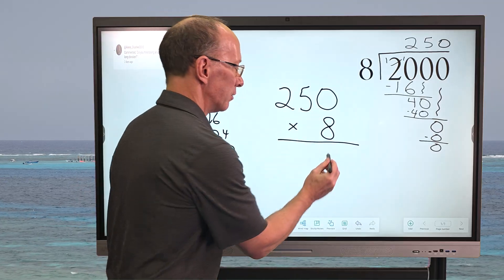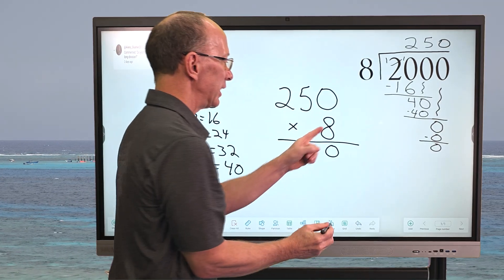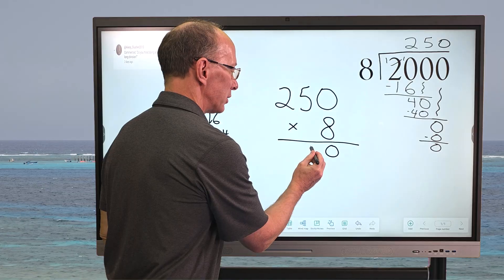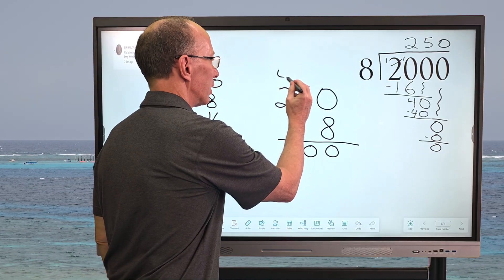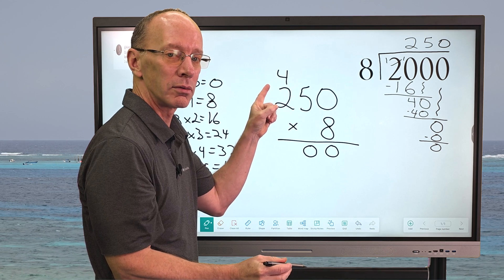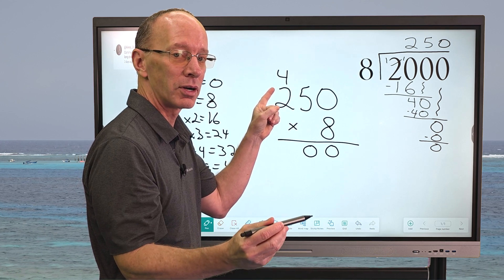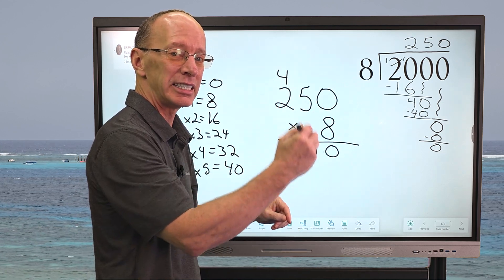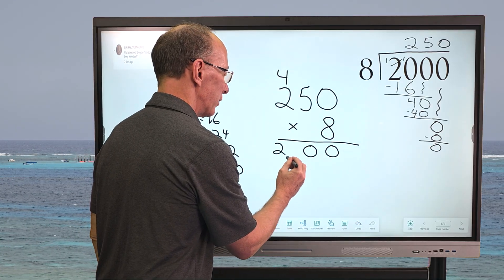8 times 0 is 0. 8 times 5 is 40. So I put the zero here. I carry the 4. 8 times 2 is 16 plus the 4. What is that? 16 plus 4? 16, 17, 18, 19, 20. I put 20 right here.